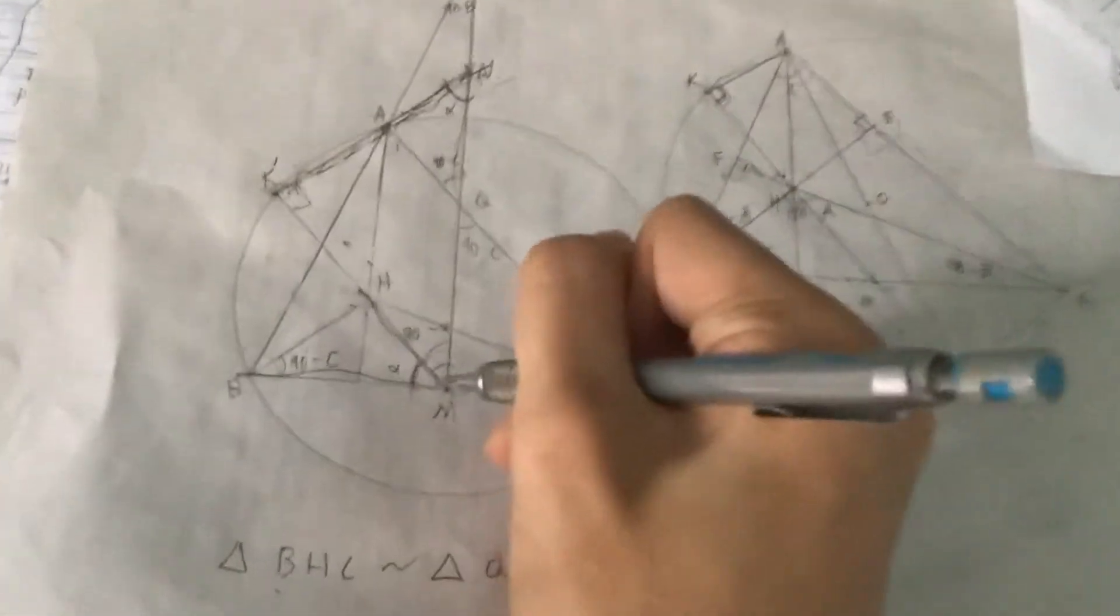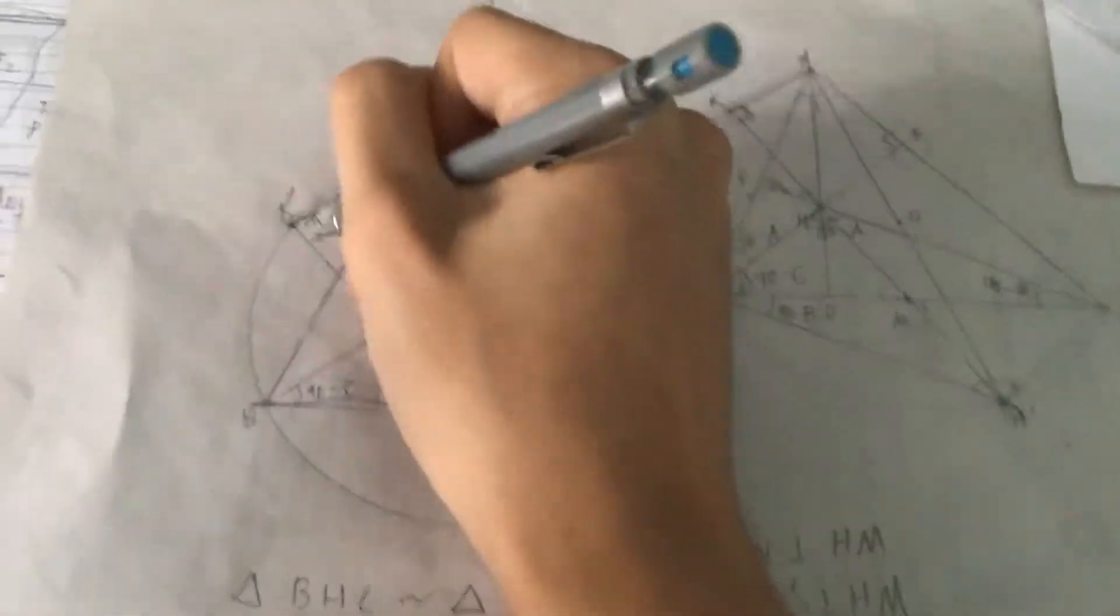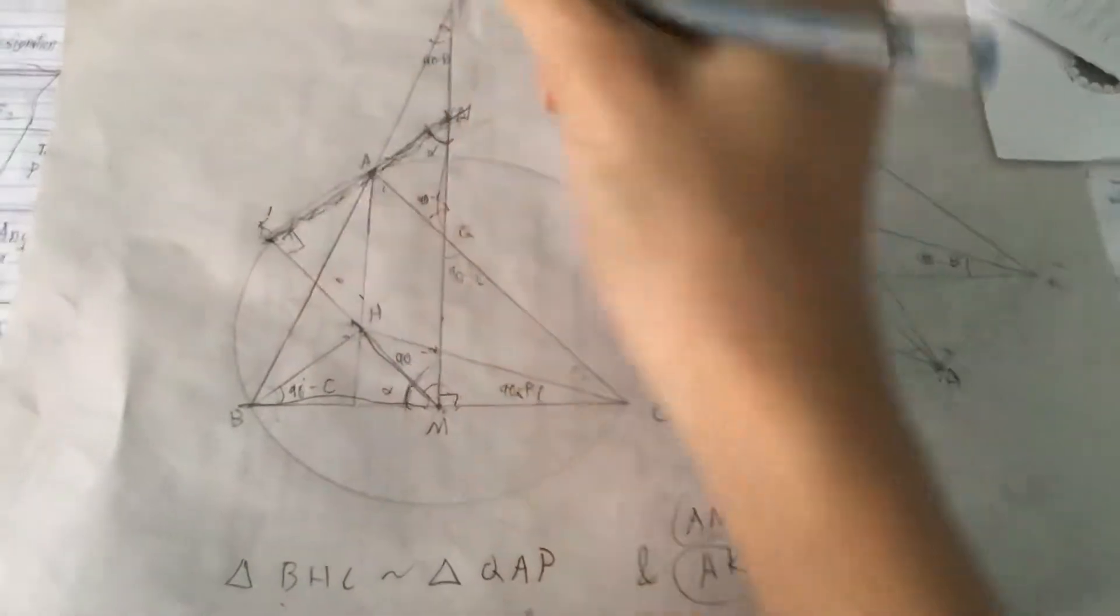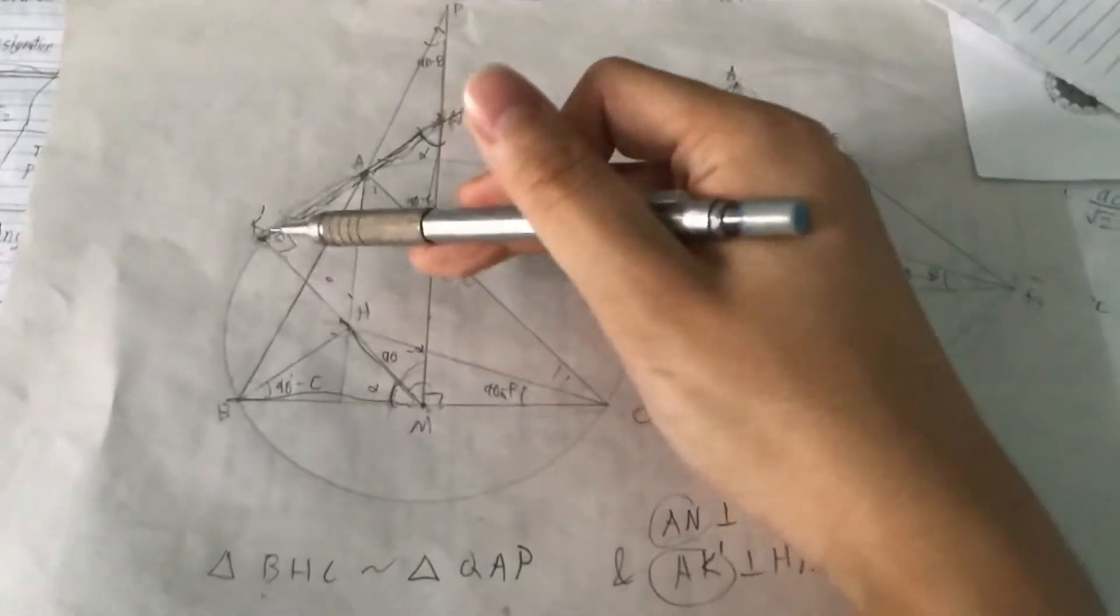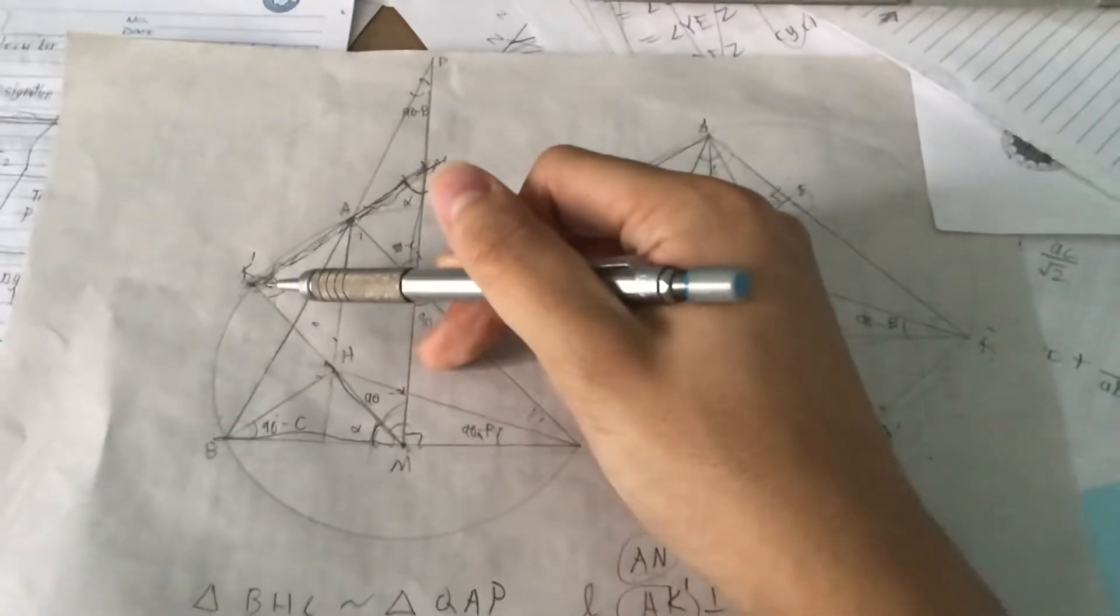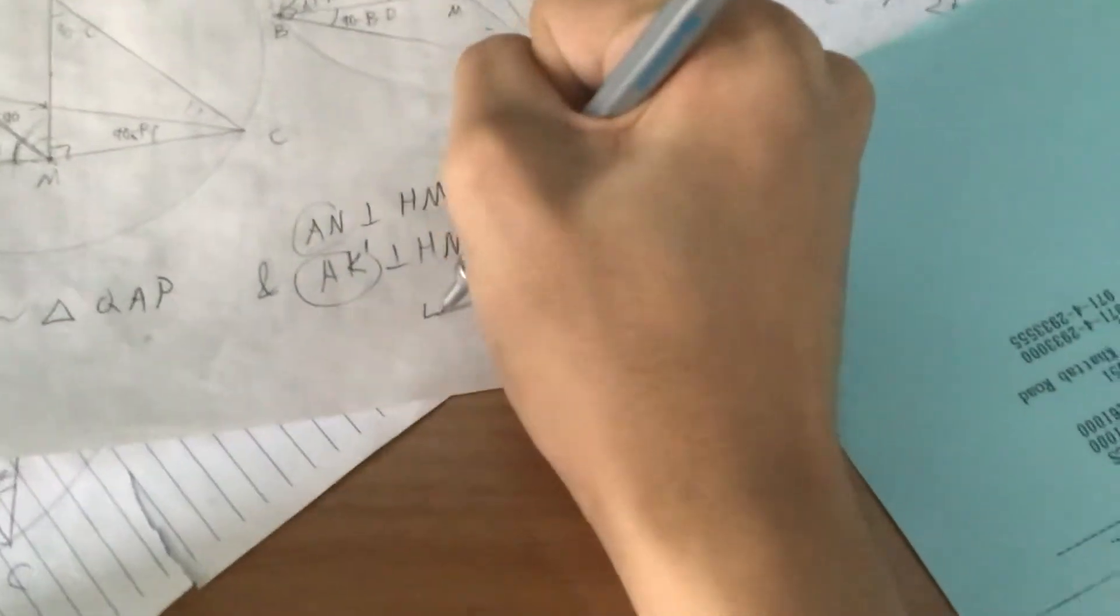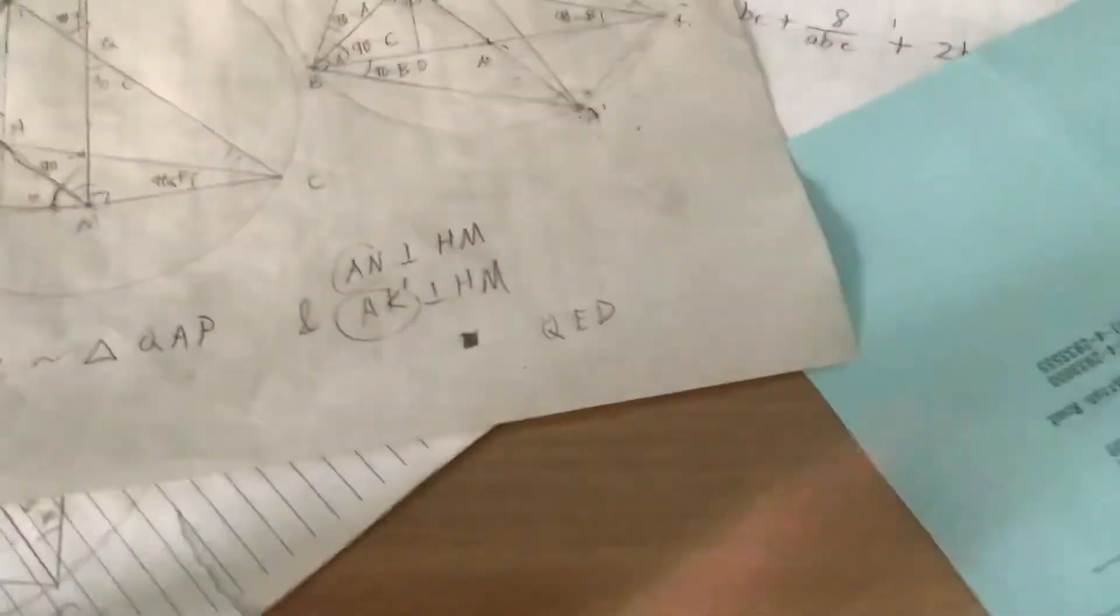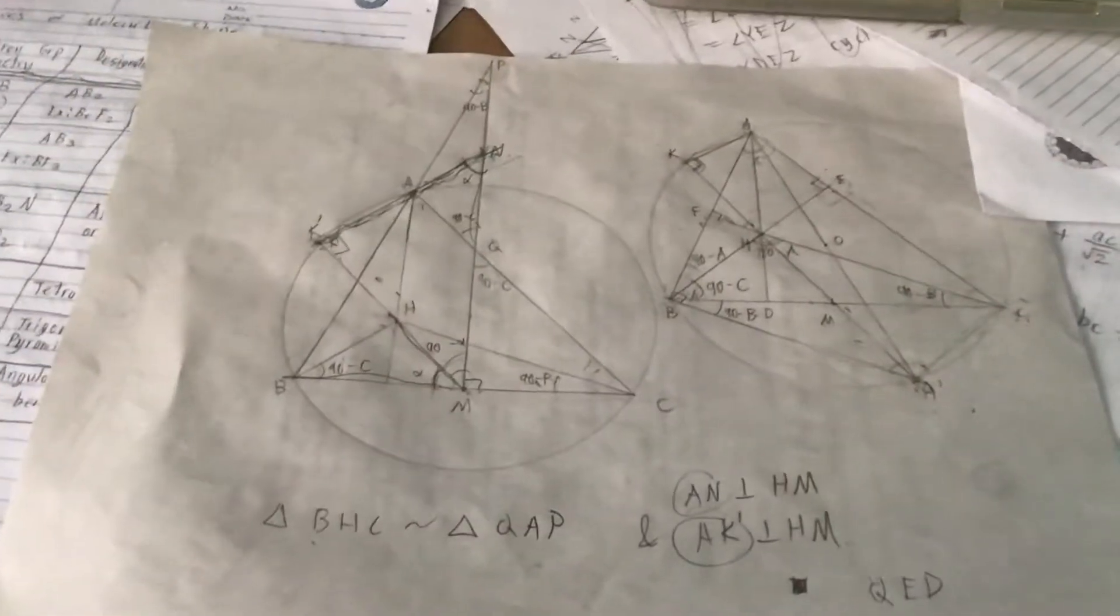We have proven that if we intersect MH with the circumcircle K prime, then K prime also lies on line AN. So K prime is the specified intersection, and we know it lies on the circumcircle. Hence they intersect on the circumcircle. QED. Or shaded square. I use shaded squares in contest. But sounds better when I say QED.